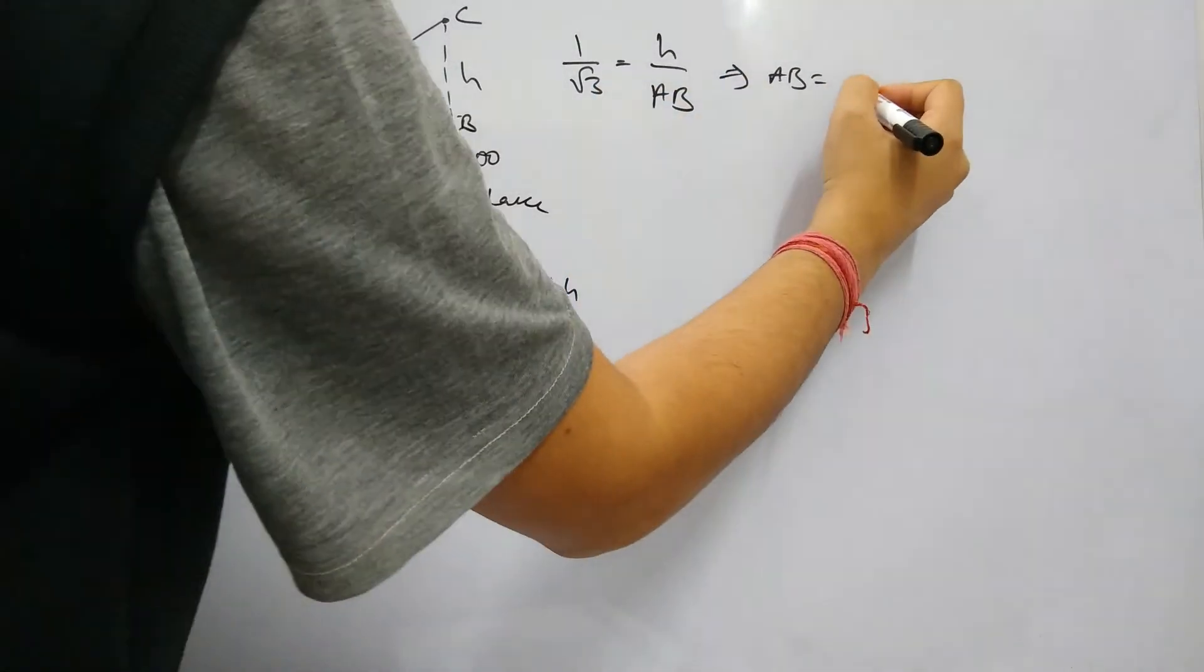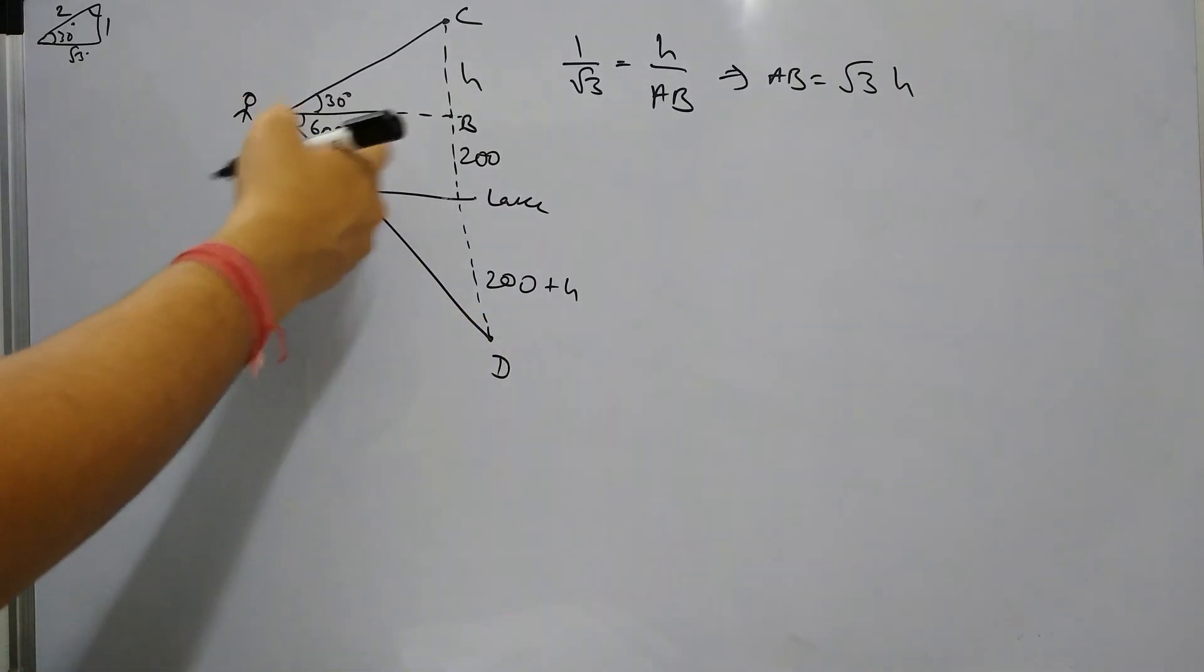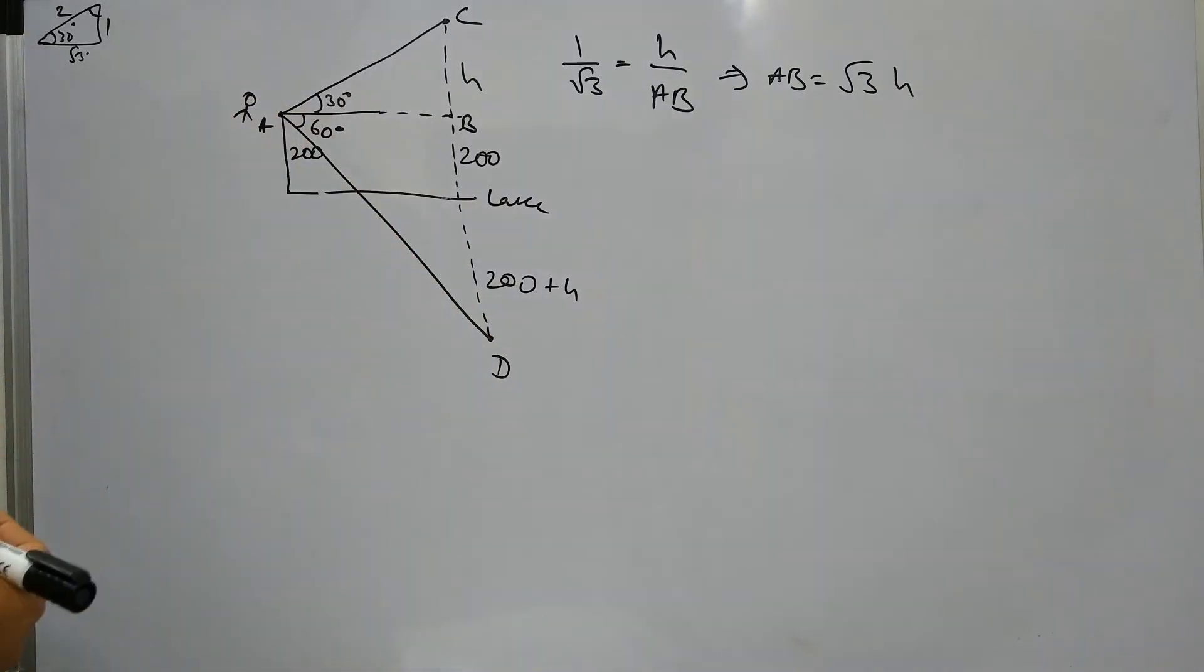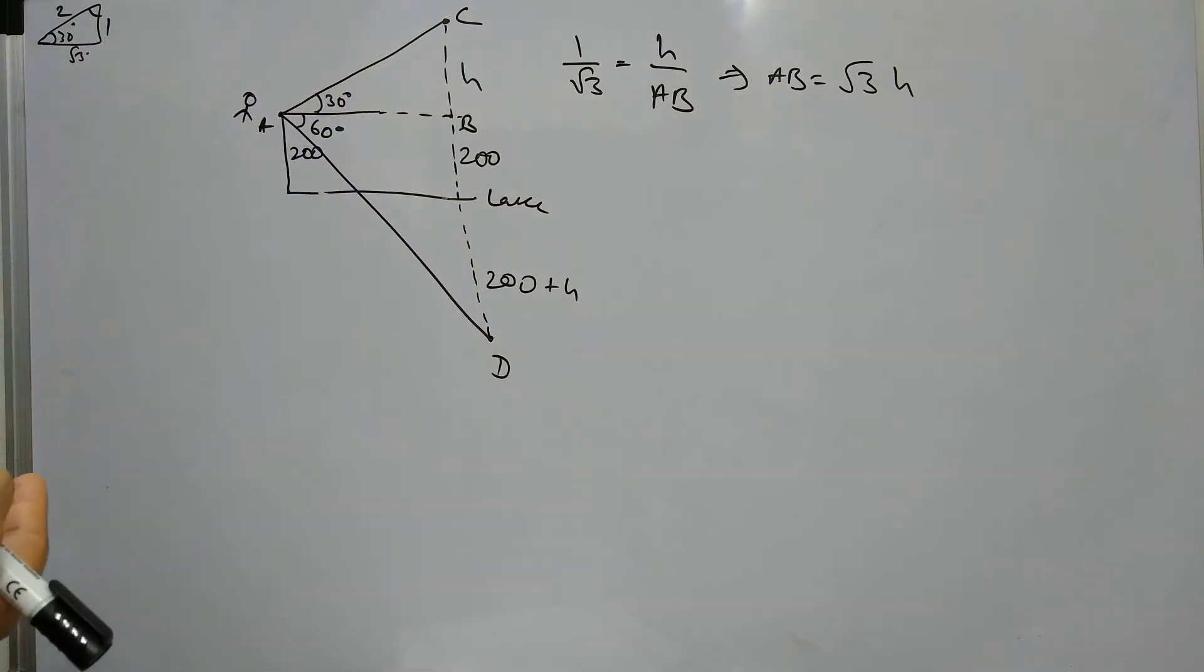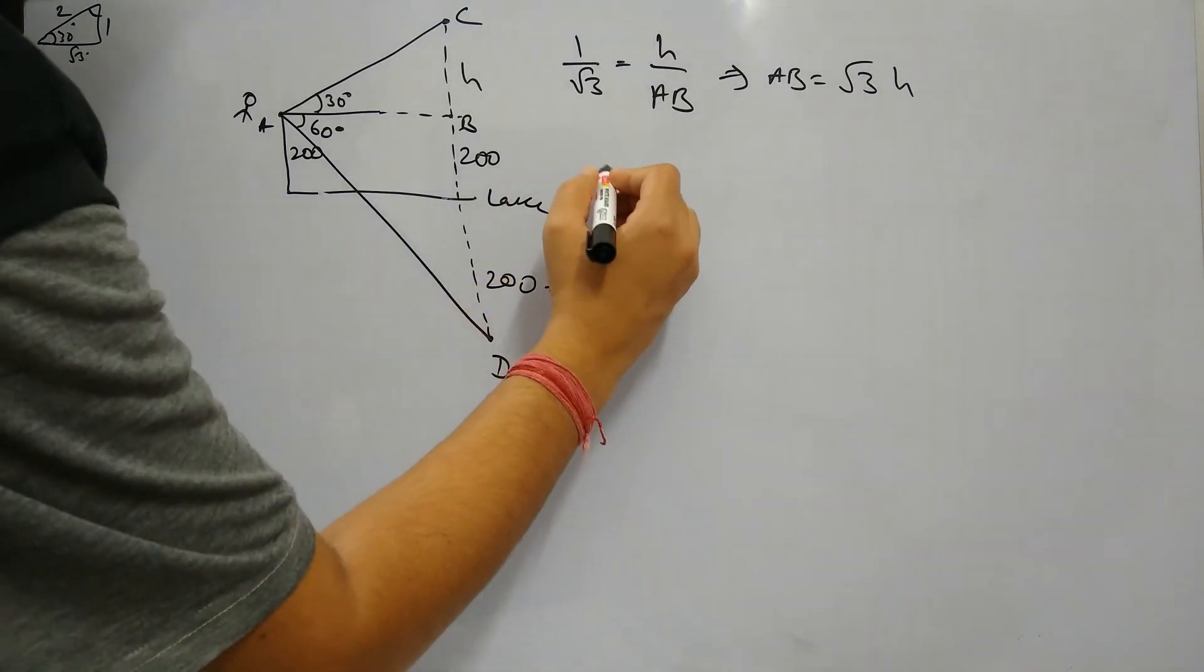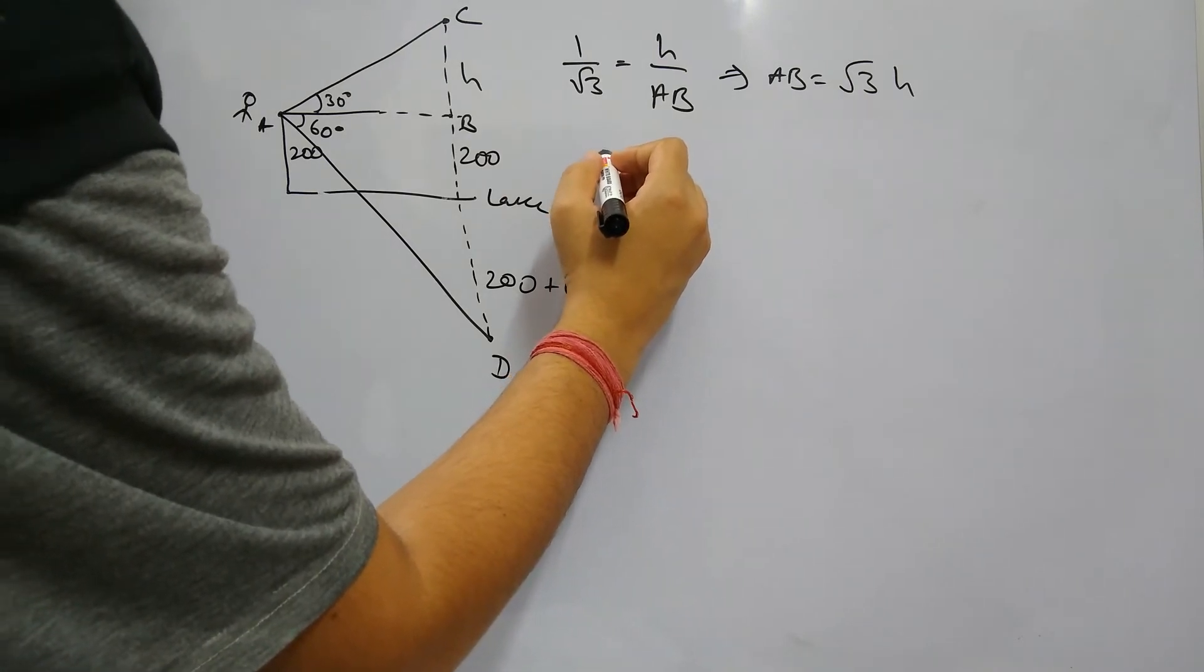So AB is essentially root 3 h. And then in the second triangle ABD, if we again take tan 60, then tan 60 is BD upon AB. The value of tan 60 will be root 3.